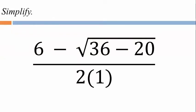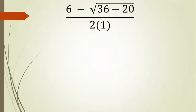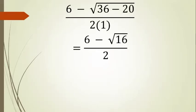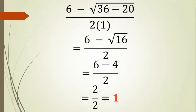Another example: (6 minus square root of (36 minus 20)) divided by (2 times 1). This is similar to the previous example but with positive 6. Take the difference of 36 and 20 to get 16, then take the square root to get 4. So we have (6 minus 4) divided by 2, giving 2 divided by 2, which equals 1.